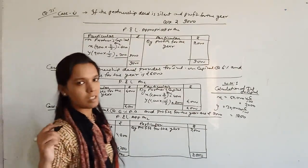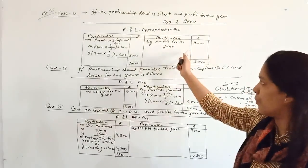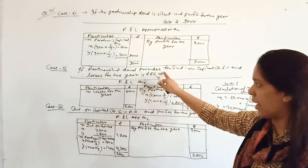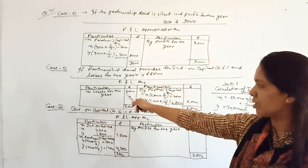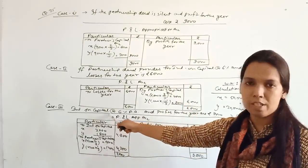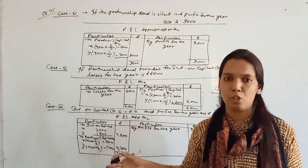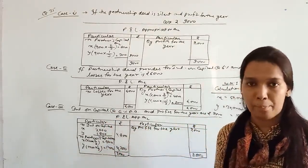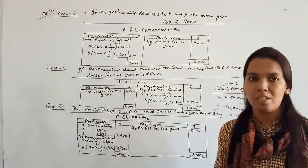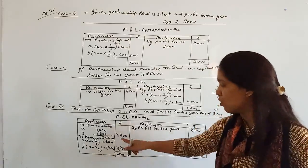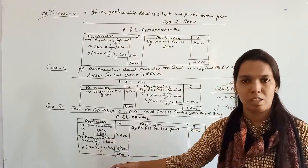Revising the three cases: In Case 1, the partnership deed is silent so no interest on capital is given and the whole profit is distributed. In Case 2, the deed provides interest but there is a loss, so no interest on capital is given and whole losses are distributed. In Case 3, interest is 4,800 and profit is 9,000, so profit is sufficient — interest is given first, then remaining 4,200 is distributed in profit sharing ratio.